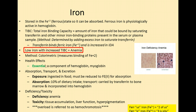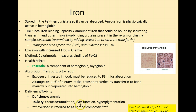Iron is an essential component needed for hemoglobin and myoglobin. Too much iron becomes toxic, causing tissue accumulation, liver dysfunction, and hyperpigmentation — a condition referred to as hemochromatosis. A memory trick: ferrous has two charges (like two kids getting along fine) and ferric has three (like a third kid making things icky), helping you remember the difference between Fe2+ and Fe3+.